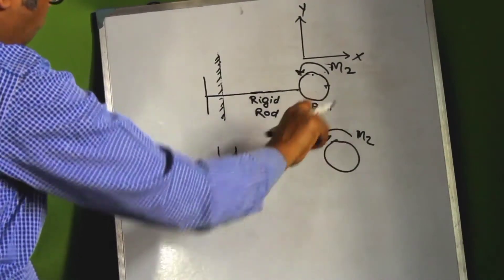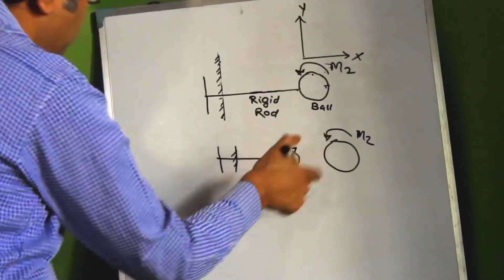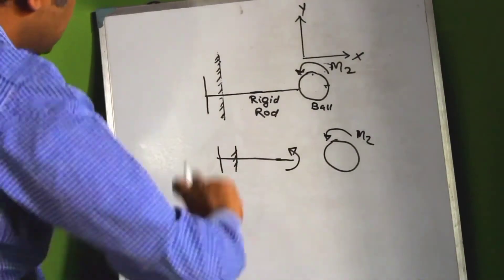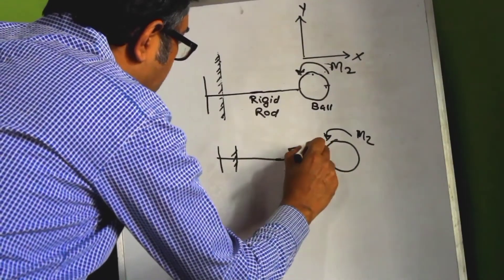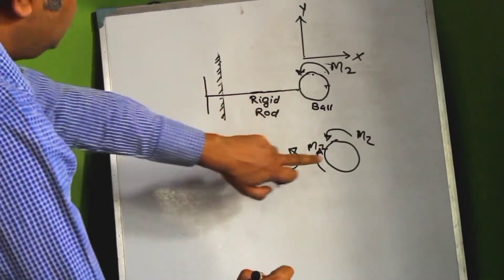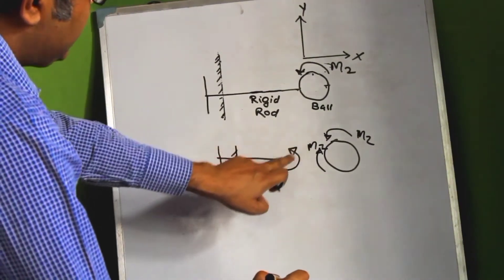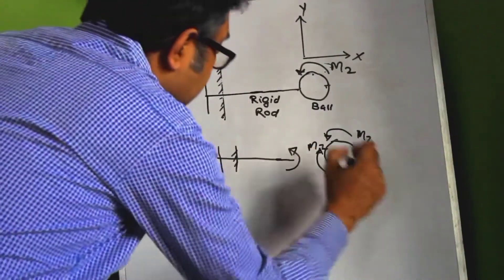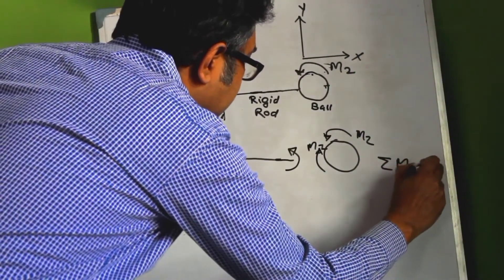So this force is being transmitted to this rigid rod like this. And this force will now try to bend the rigid rod. As an equal and opposite reaction, the rigid rod could apply an equal and opposite moment on this particular ball. So we had applied an anti-clockwise moment MZ to the ball. This rod applied back an equal and opposite, that is a clockwise MZ moment on this ball. And thus this ball would not rotate because the summation of moment about Z axis is zero.